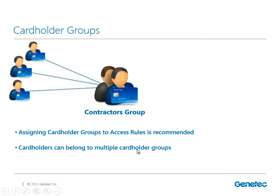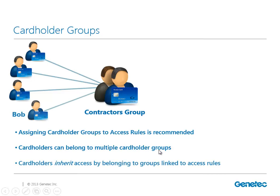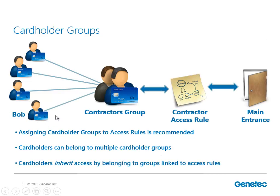Cardholders can belong to multiple cardholder groups. In this example, we have Bob - he's a cardholder assigned to the contractors group. The contractors group is assigned to the access rule called 'contractors,' and then we have the 'where' assigned to the access rule. Now Bob is going to have access to our main entrance. The cardholders will inherit the access belonging to the group linked to the access rule.